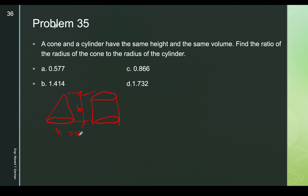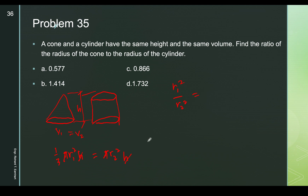The volume of the cone is (1/3)π r₁² h and the volume of the cylinder is π r₂² h. Setting them equal: (1/3)π r₁² h = π r₂² h. Since π and h cancel out, we get (1/3) r₁² = r₂², so r₁² = 3 r₂². Cross-multiplying gives r₁²/r₂² = 3.